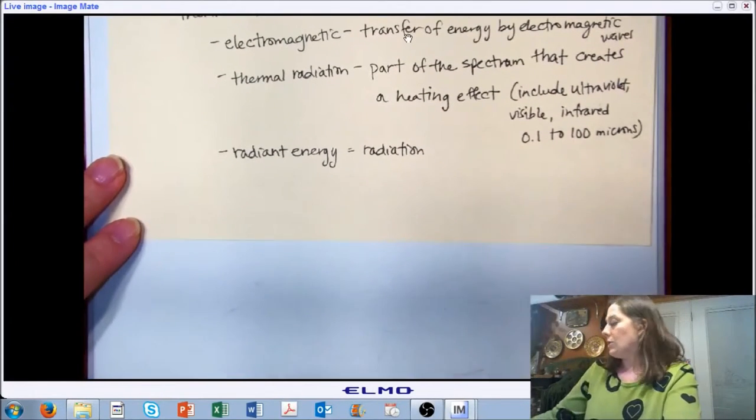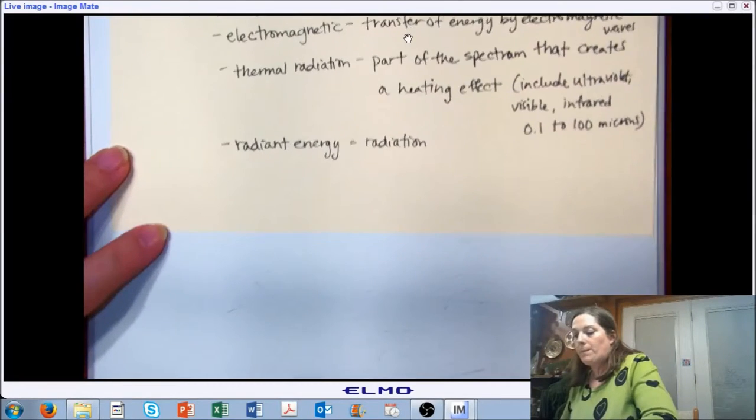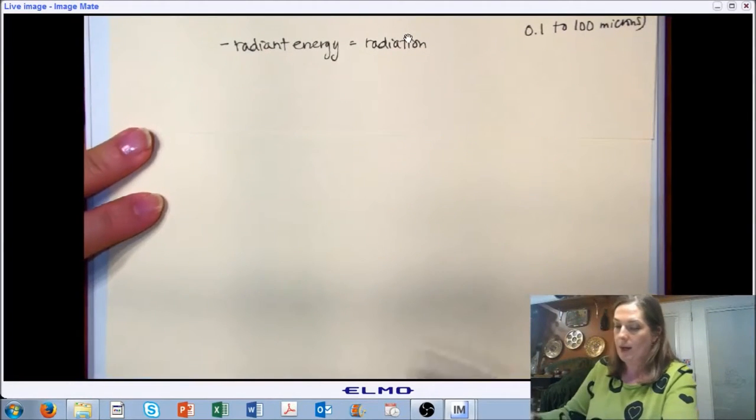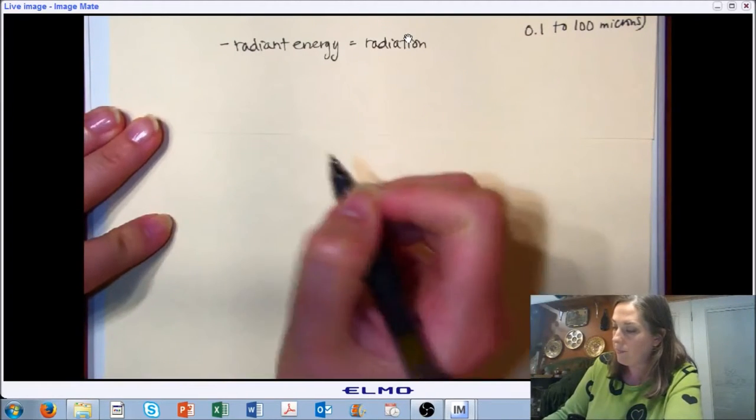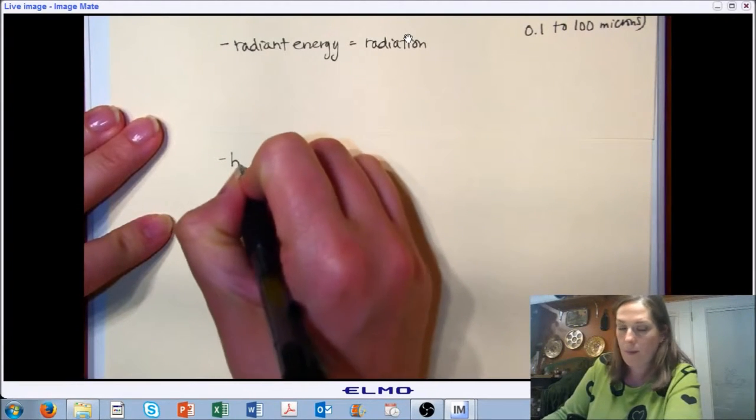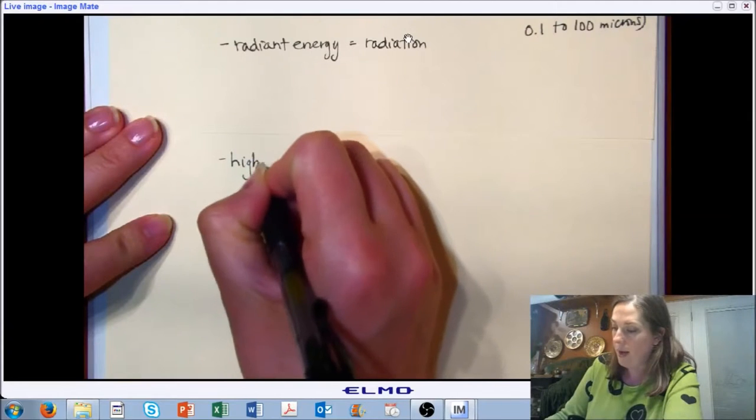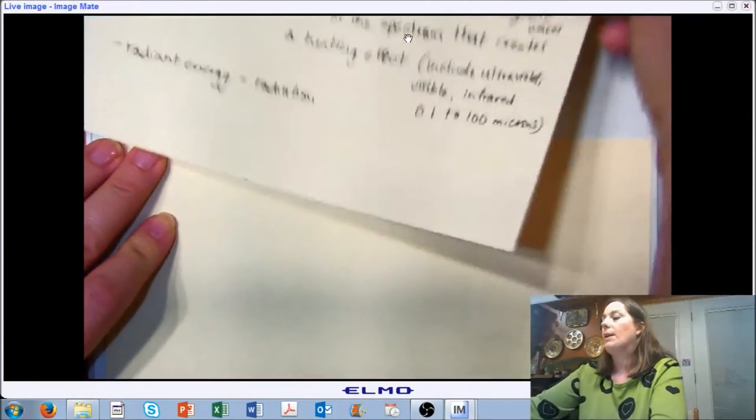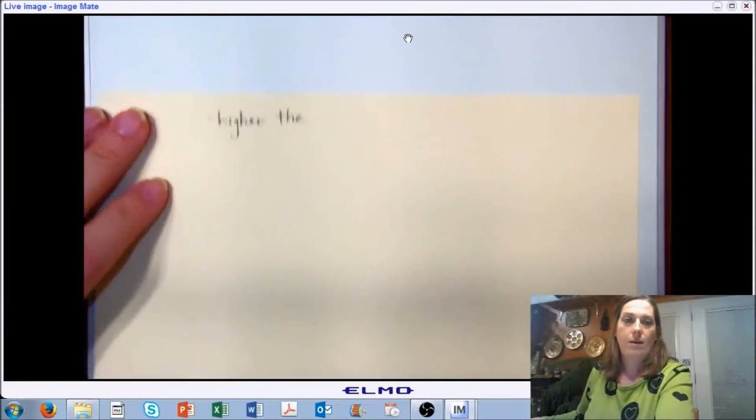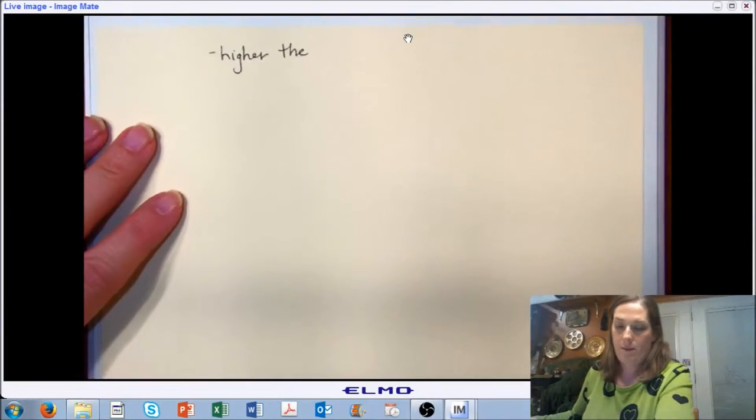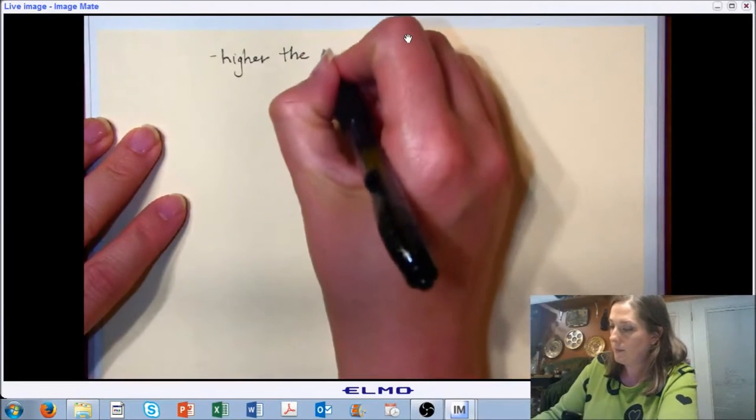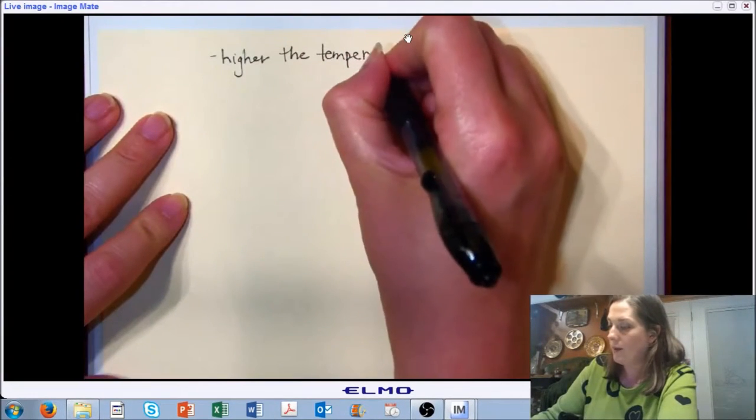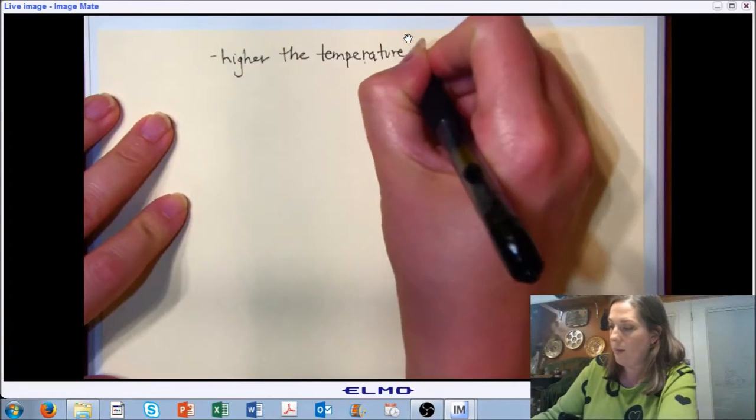Now in terms of relationships, some of the governing relationships we know about radiation. If we have higher temperatures, higher surface temperature of the emitting body, the higher the temperature, the more radiation is emitted.